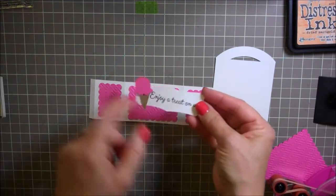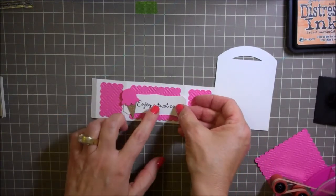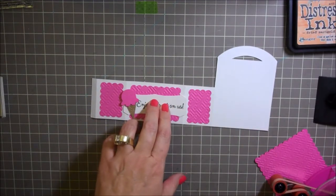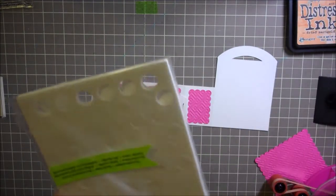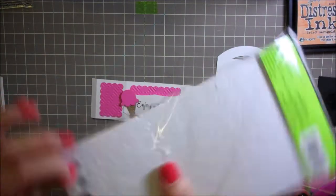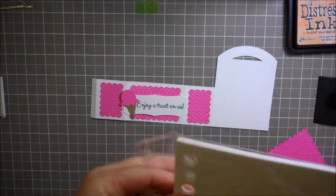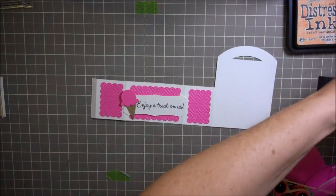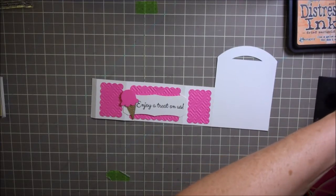Then the cute little sentiment which is a little ice cream. I cut out an extra one of these ice creams. I thought it'd be really cute to put that on. I think I'm going to add that up with some pop dots, just to pop it up and make it stand out a little bit.